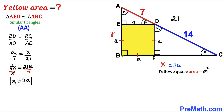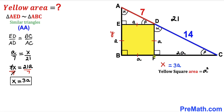We know that BF has length a, so the remaining segment FC equals 3a minus a, which is 2a. Therefore segment FC has length 2a.